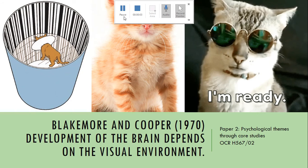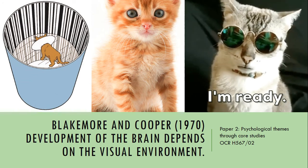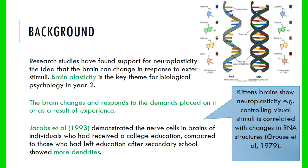I'm going to go through Blakemore and Cooper's study on the development of the brain and how that depends on the visual environment. This is a biological study, so I'll skip through the background briefly. There's quite a lot to cover, but I'll also go through the visual system so you get a brief understanding before we look at the neurological analysis.